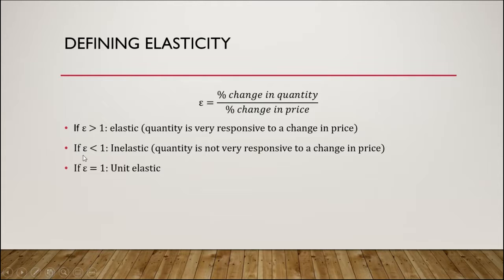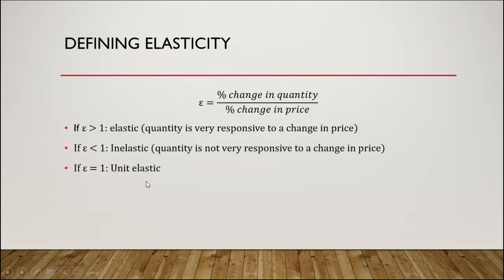If that ratio is less than one, then we say that the demand or supply is relatively inelastic — quantity is not really responsive to a change in price. We have a relatively small change in quantity compared to a relatively large change in price; a large increase in price would lead to little decline in quantity demanded. If the ratio is exactly one, we call it unit elastic — the percent change in quantity is equal to the percent change in price.